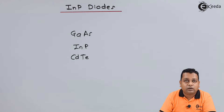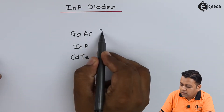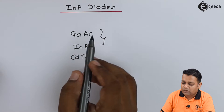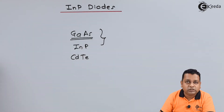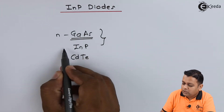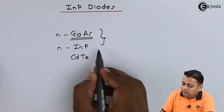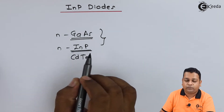J. B. Gunn in the year 1963 first discovered the Gunn effect. He conducted a lot of experimentations and showed oscillations with respect to N-type Gallium Arsenide as well as N-type Indium Phosphide.